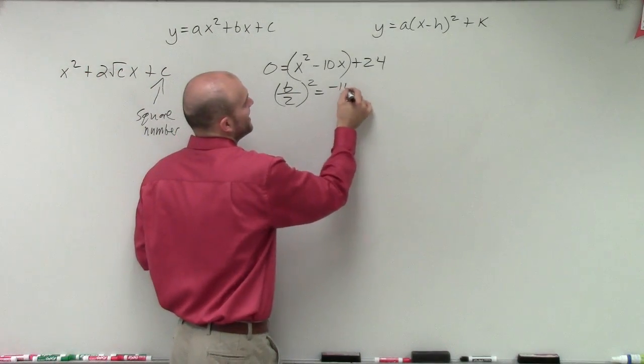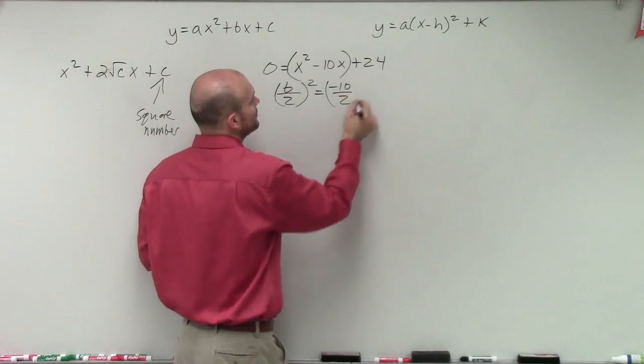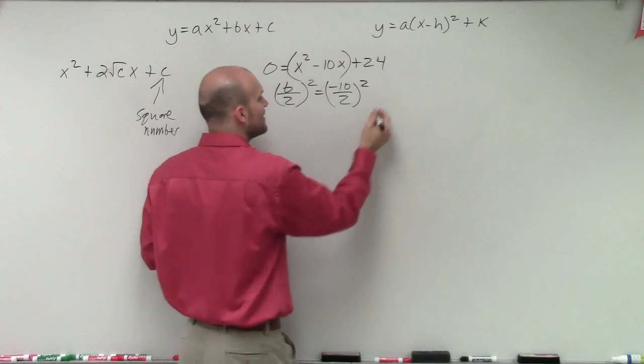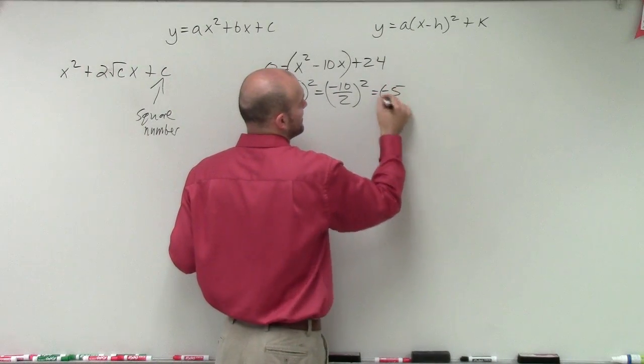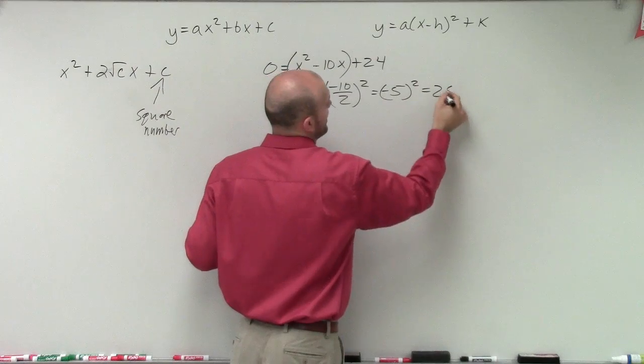And that's going to create my perfect square trinomial. So in this case, I have negative 10 divided by 2 squared. Well, negative 10 divided by 2 is going to be a negative 5 squared equals positive 25.